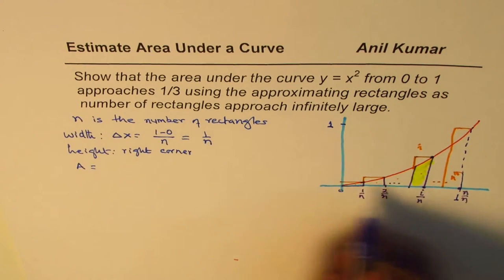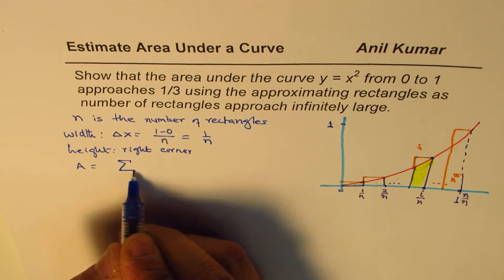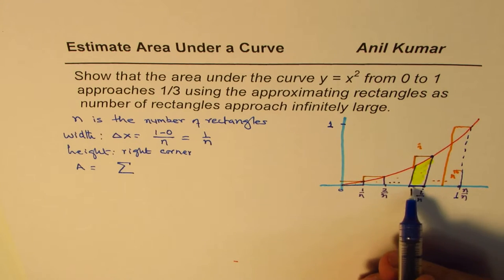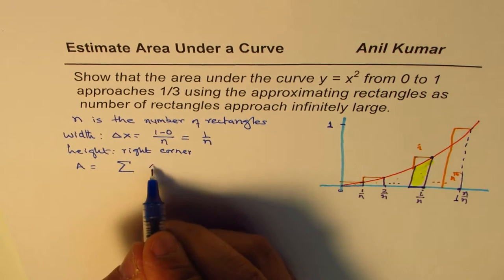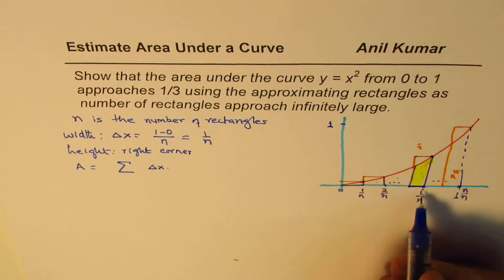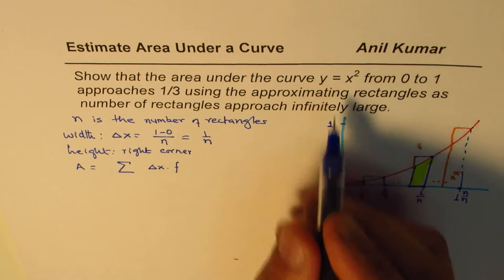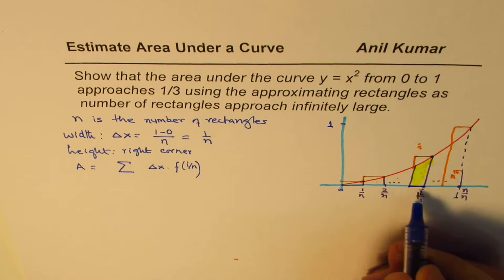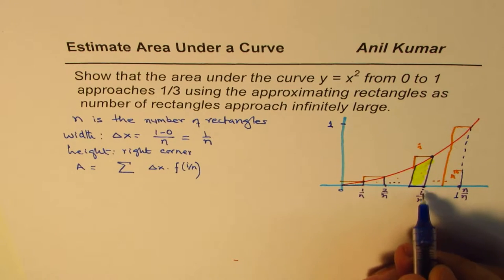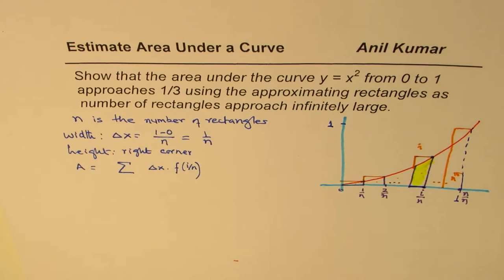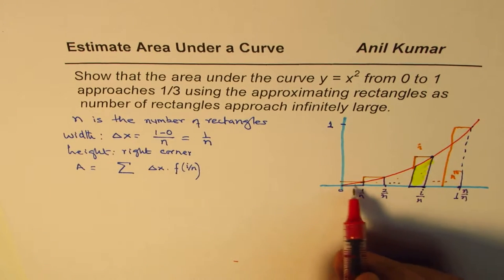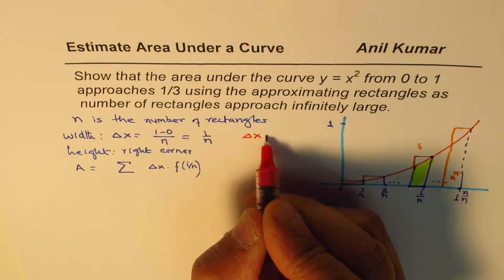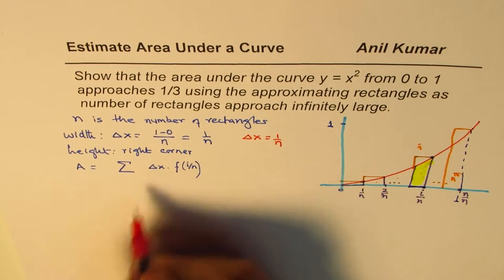So let's find the sum of all these areas of the rectangles. So we say area will be equal to sum of all the rectangles. We are considering the general rectangle. Here what is the width? Width delta x is 1 over n. So we will say delta x is the width times height. So height is the value of the function at this point which is i over n. Now what we know here is that since we have divided the space in n equal parts, delta x is equal to 1 over n.